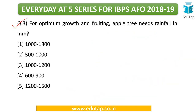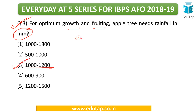The third question: for optimum growth and fruiting, the apple tree needs how much rainfall in mm? The answer to this question is 1000 to 1200 mm. Kindly memorize this — this is the annual requirement.